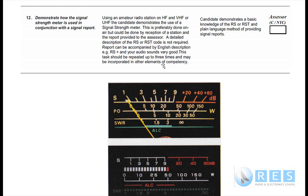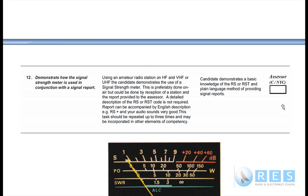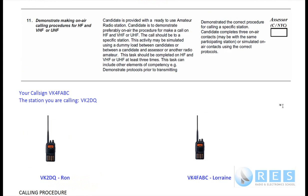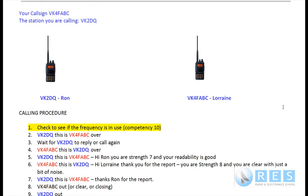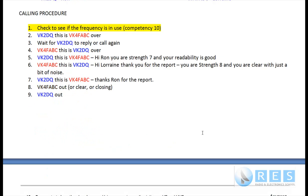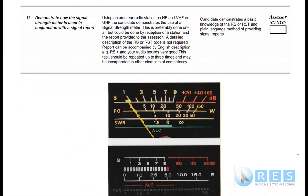This test should be repeated up to three times. Basically you contact a station like we did in competency 11, and before you ever make a transmission on air you do competency 10, protocols prior to transmission. We established contact just like before, and when we did this contact we also gave a signal strength report. For example: 'you are strength 7 and your readability is good,' and VK4FABC gave me a report: 'you are strength 8 and you are clear with a bit of noise.' So where does the strength 7 and strength 8 come from? It comes from the S meter, which is competency number 12.